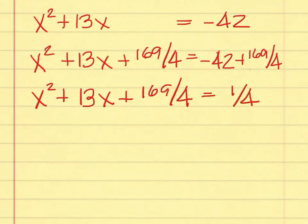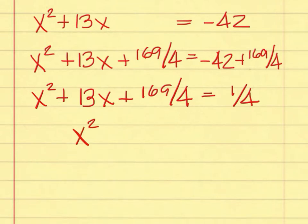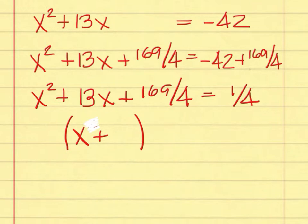What is the next step? After prompting students, a student correctly identifies: you put x plus 13 over 2 in parentheses, and what's missing from those parentheses is a square — it's quantity squared. So the left-hand side becomes the quantity x plus 13 over 2, squared.